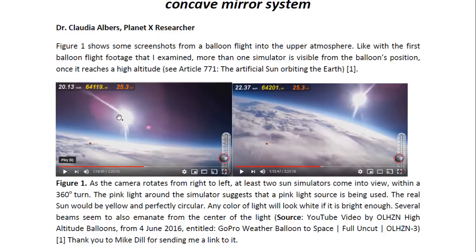Now here you can see the simulator. Obviously it doesn't look like the sun, it's not perfectly circular, it's not yellow. And it has these beams coming off it. And as the camera rotates from right to left, at least two sun simulators come into view within a 360 degree turn. So the camera rotates this way, it sees this one, and then after about something like 180 degrees, definitely not 360, this one comes up. So there are at least two. In the previous one, Article 771, there were at least four.